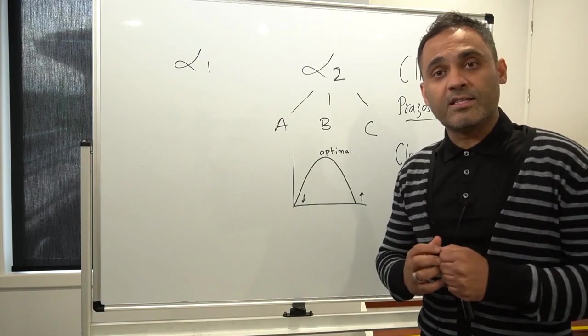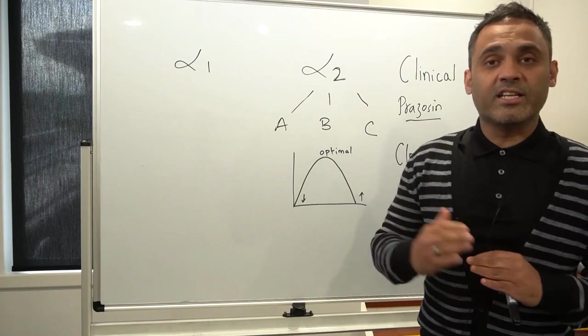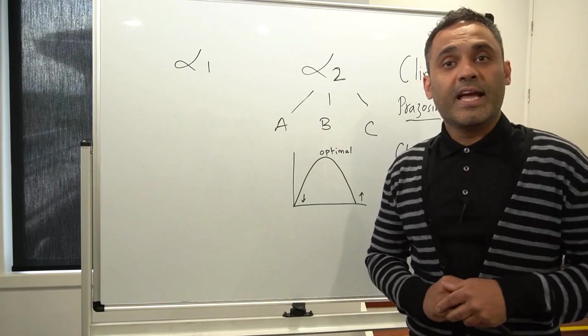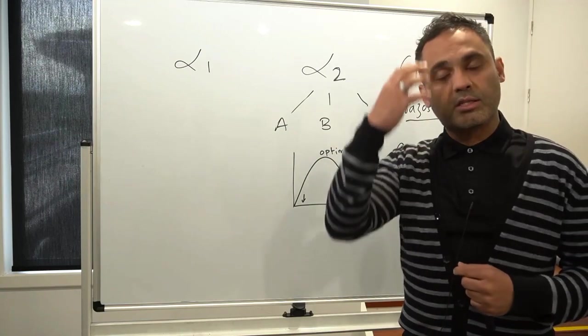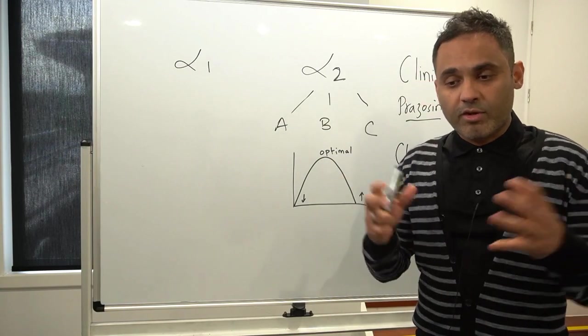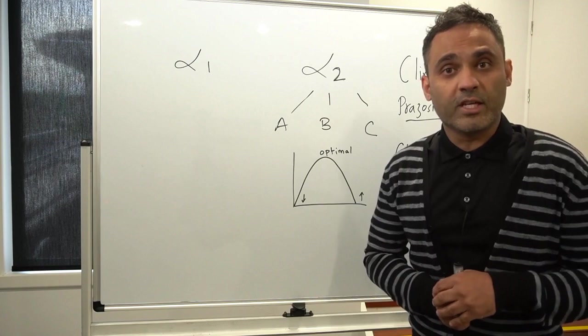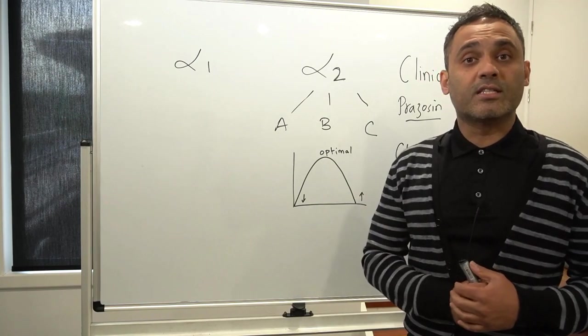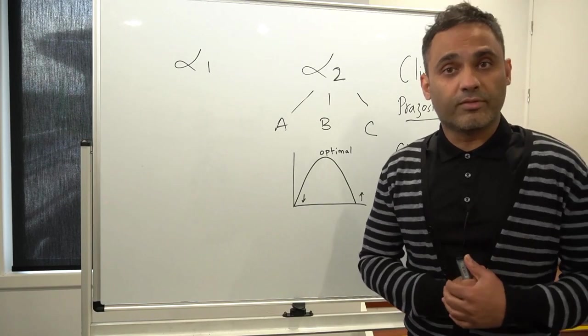On the other hand, by acting as an agonist at the post-synaptic 2A receptor it can enhance noradrenaline in the prefrontal cortex and strengthen network connectivity which can be advantageous for symptoms such as inattention and organizational difficulties.